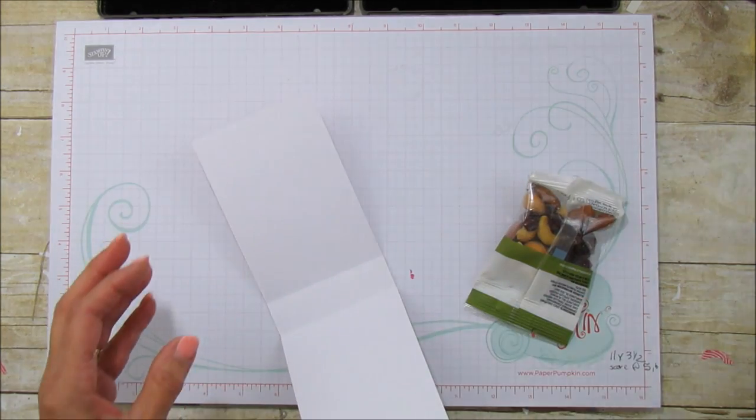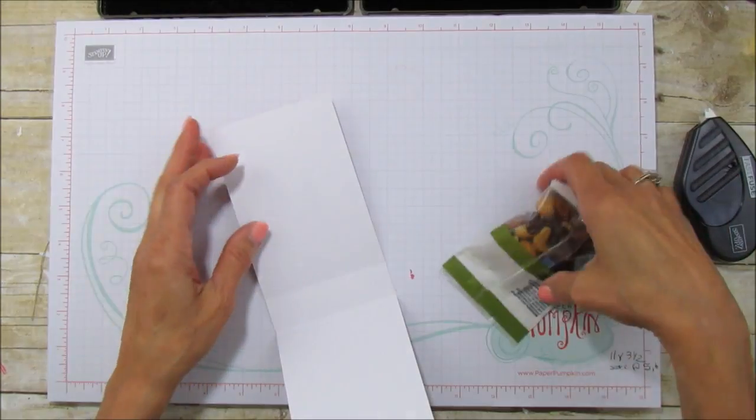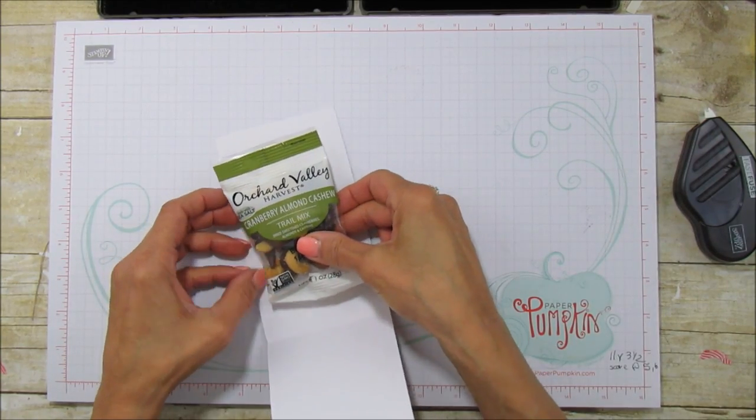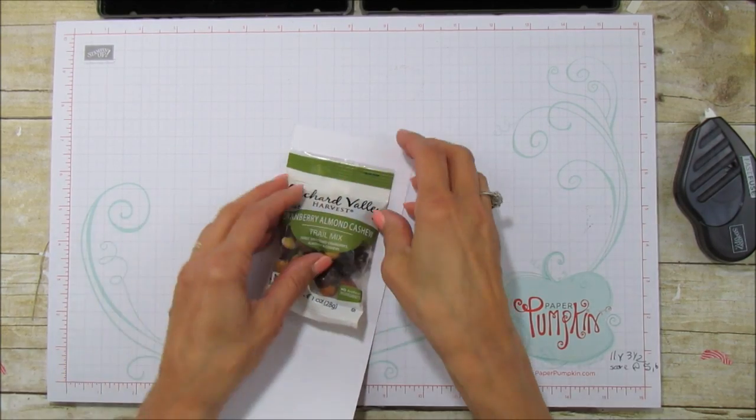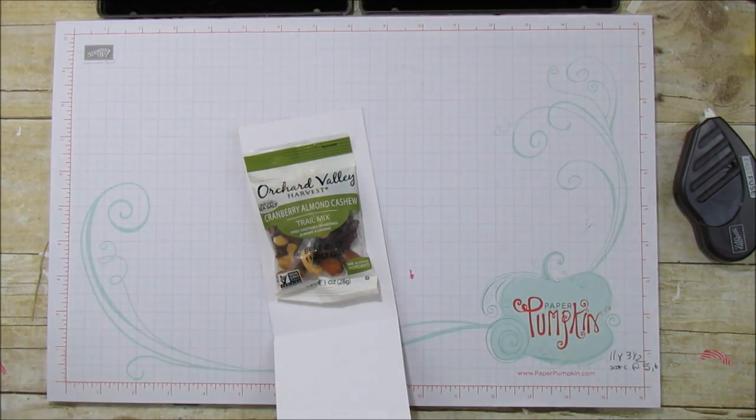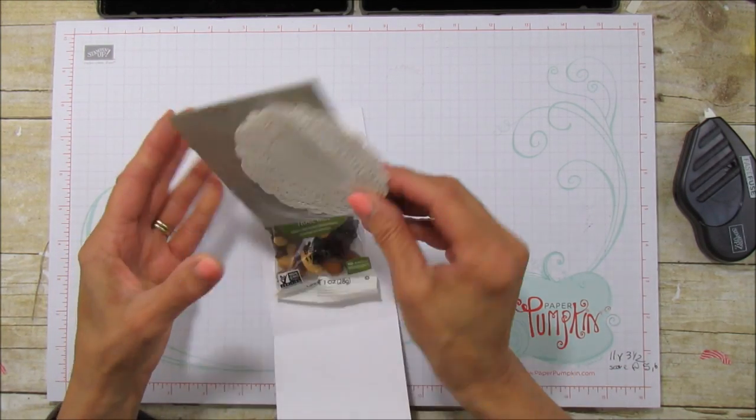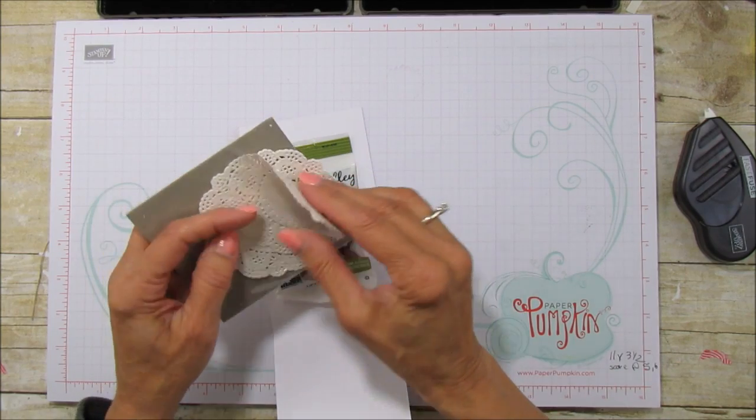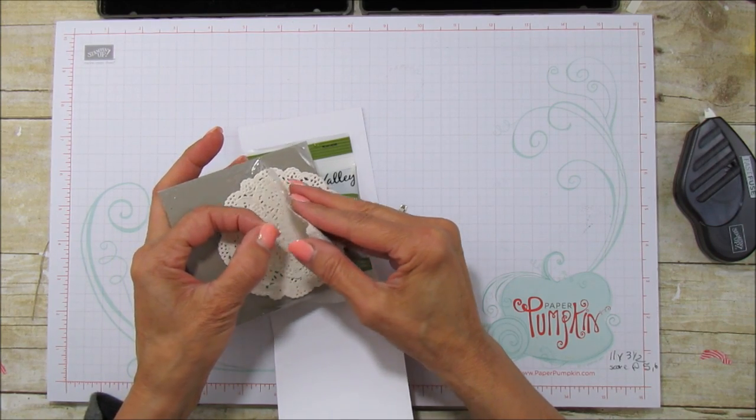And then how I'm just going to attach, I'm going to use my Fast Fuse and I'm just going to run a couple strips down here and it'll stick to there. And I'm setting it down towards the bottom. And you're going to need some of our white, these are the delicate white doilies and these are still available. They'll also be in our new catalog still.